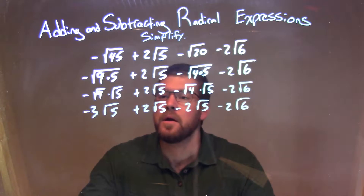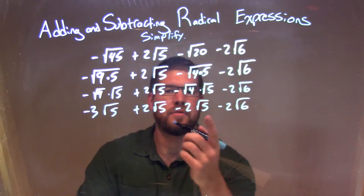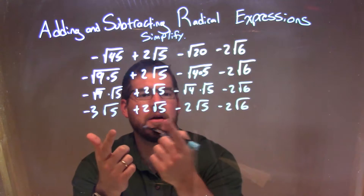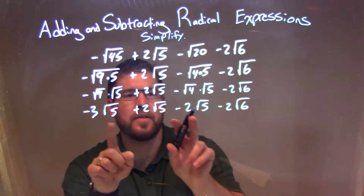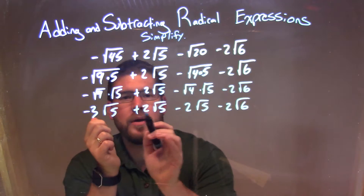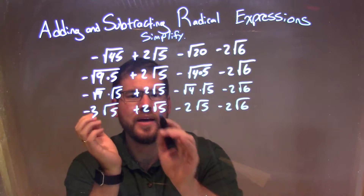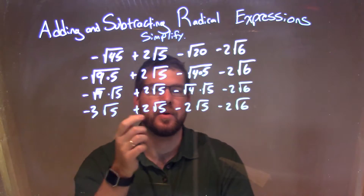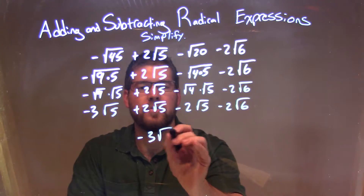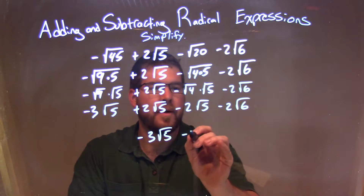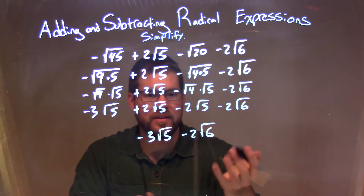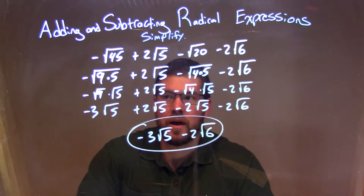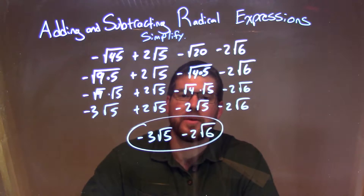Now we're almost done. We look at the ones that have the square root of 5 — there are three of them, so we can combine those. We look at the numbers out in front: negative 3 plus 2, minus 2. 2 minus 2 is just 0, that negates it, so we just have a negative 3. So minus 3 square root of 5 here. And then we bring down the minus 2 square root of 6 — there's nothing else with square root of 6 to combine it. And there we have it, our final answer: negative 3 square root of 5 minus 2 square root of 6.